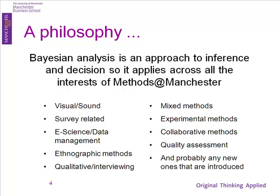It's a philosophy — Gillian asked me to decide which heading I should come under in Methods at Manchester, and I asked for all of them. It really is difficult to say you can have Bayesian survey-related methods but not Bayesian quality assessment. You can't have Bayesian anything — it's an approach, and that's what I'm going to try and get across over the next half hour.